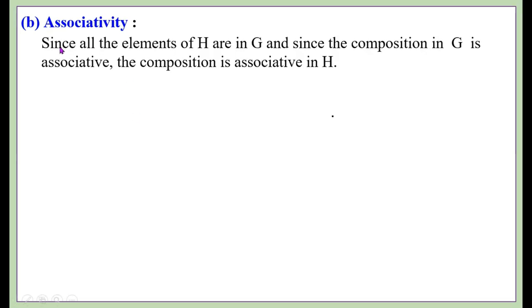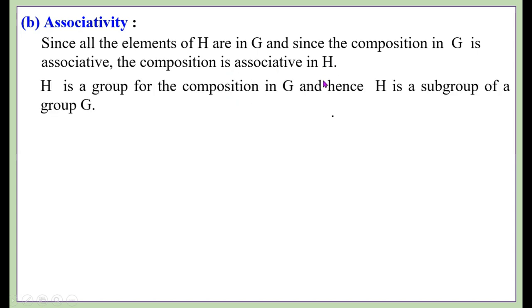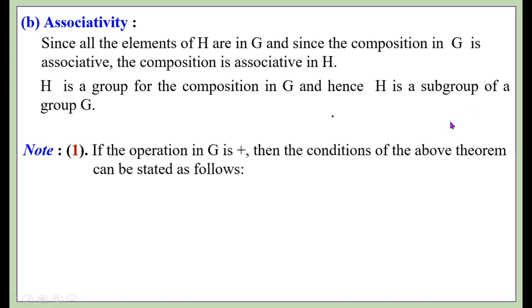Now we prove the associative axiom. Since all elements of H are in G (because H is a non-empty complex of G), and since the composition in G is associative (G is a group), the composition in H is also associative. Thus H is a group under the composition of G, and hence H is a subgroup of G.